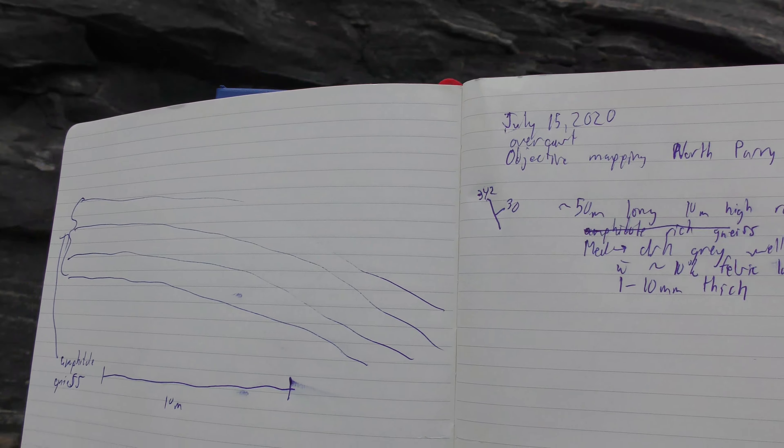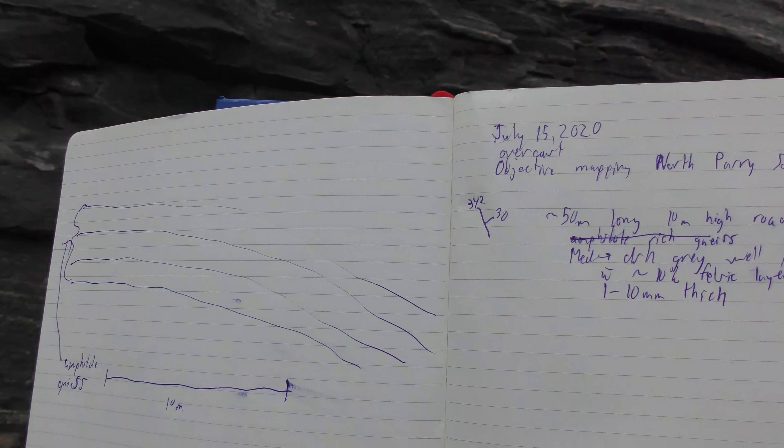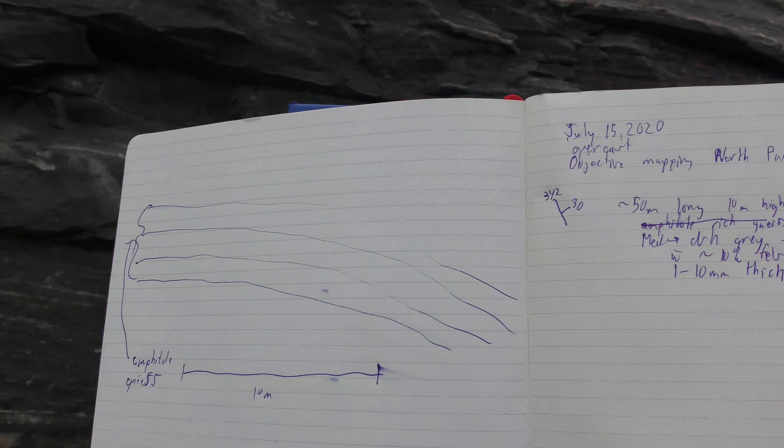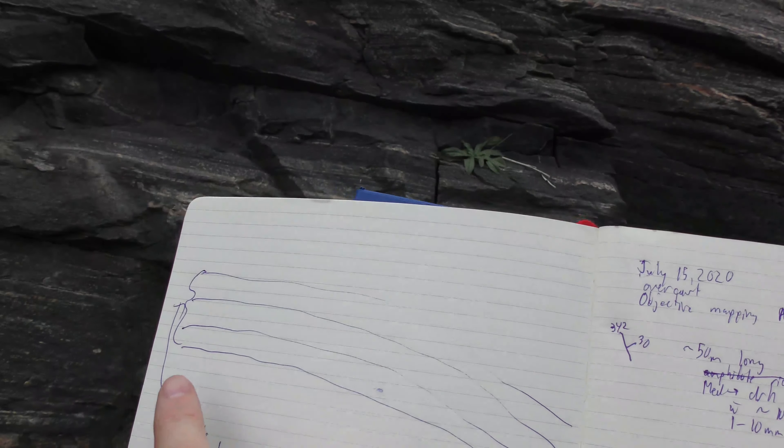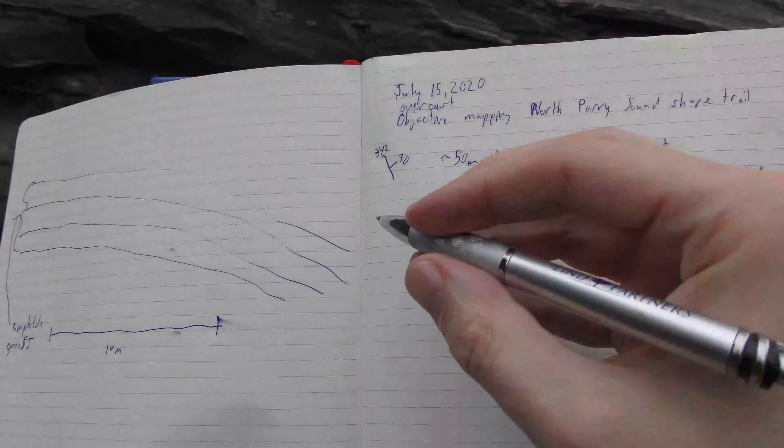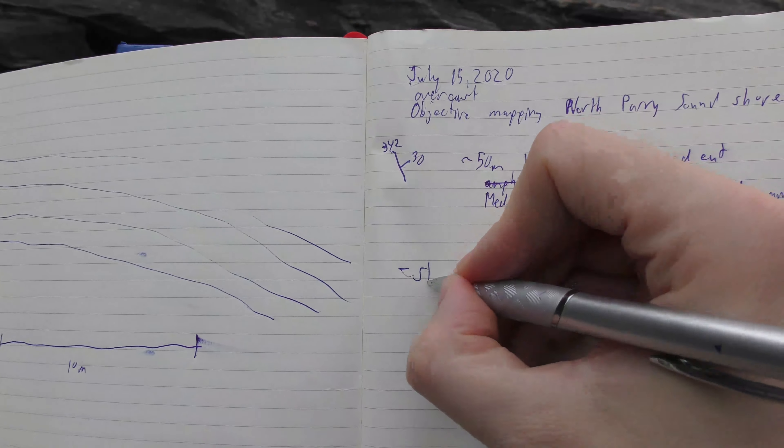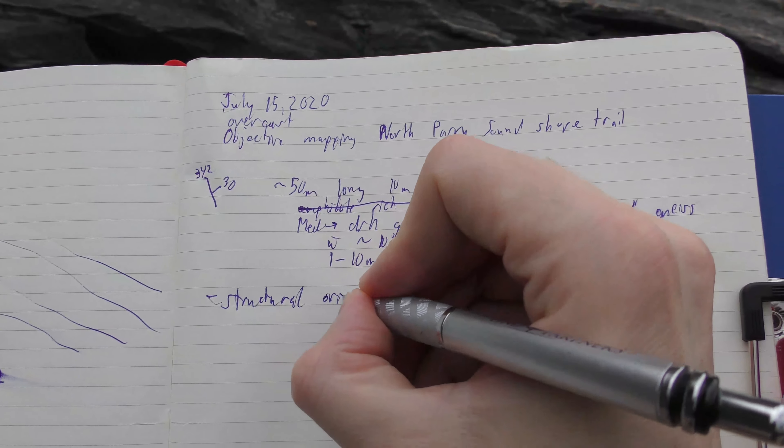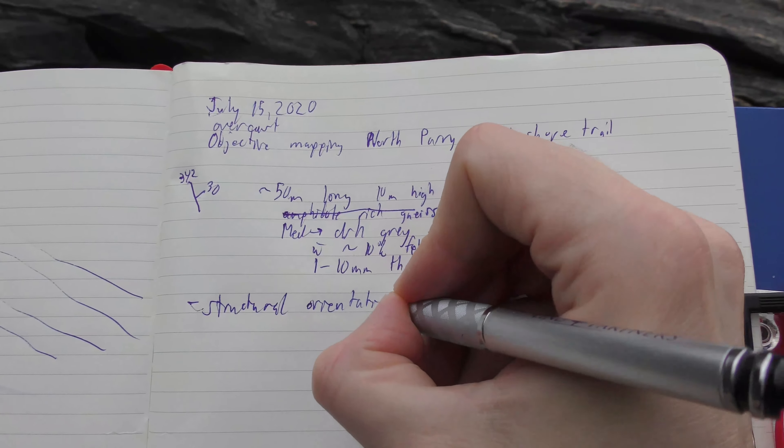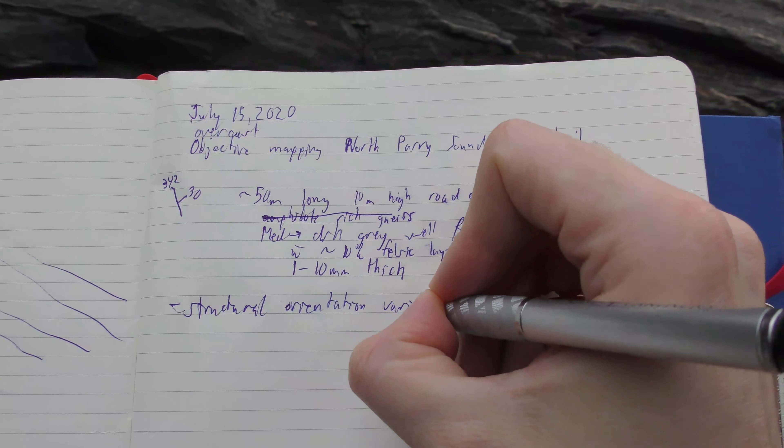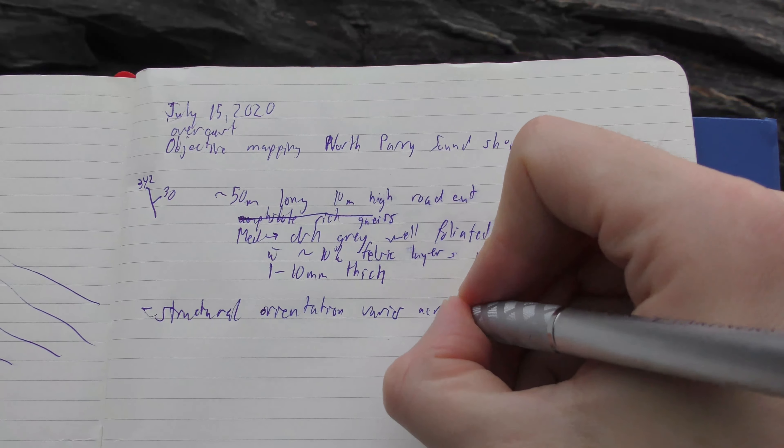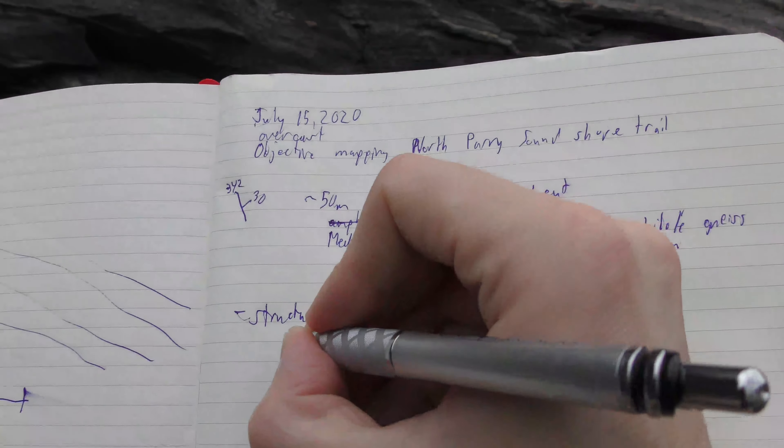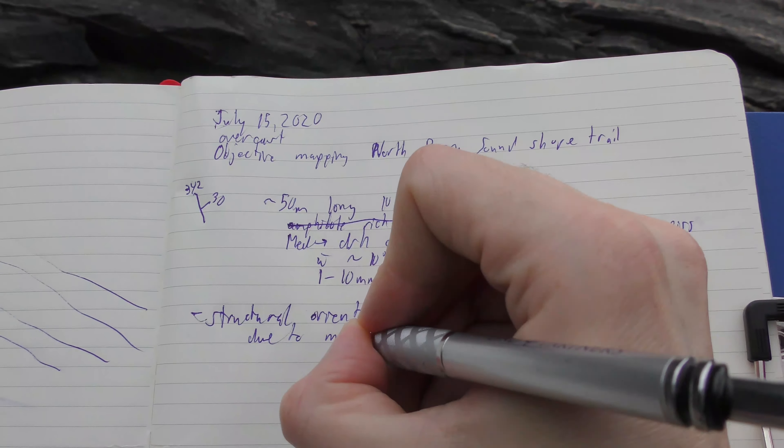But we want to know is this whole outcrop doing that structure measurement that we took, or is it varying some? It is varying some, so this little sketch is going to help show me that. I'll make a quick note that the structural orientation varies across outcrop due to minor folding.